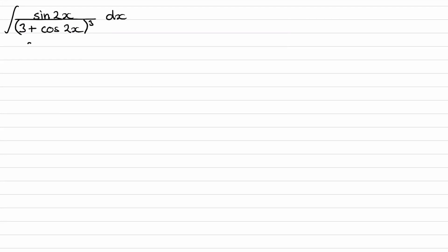To start this question off, we bring up what's on the denominator to the top. That becomes 3 plus cos 2x to the power of minus 3. The power becomes the negative of what it was at the bottom.